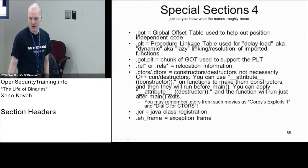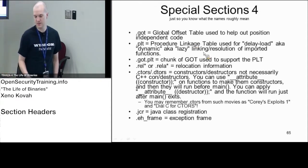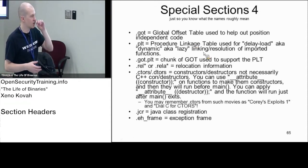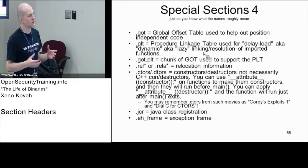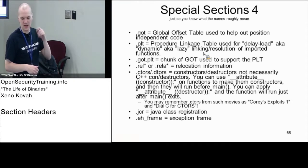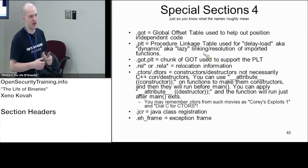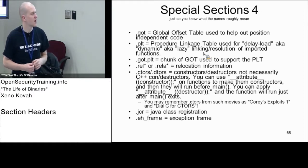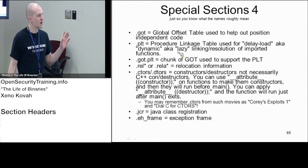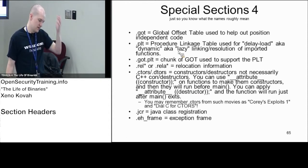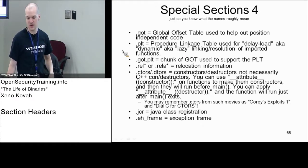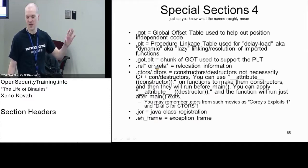The .got section is the Global Offset Table, used for position-independent code. If you compile with -fPIC, it's used to find relative offsets to globals and other symbols. The .plt section is used for delay-load or dynamic imports. The PLT is like the delay-load import address table, whereas .got.plt is the location containing the stubs — though a picture coming up will clarify the exact relationship.